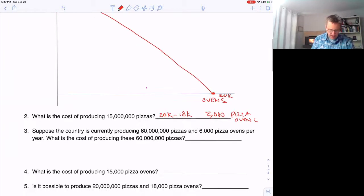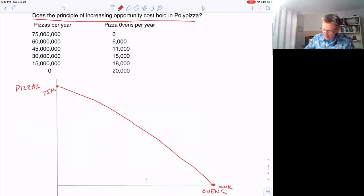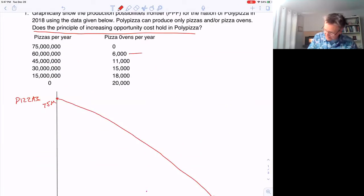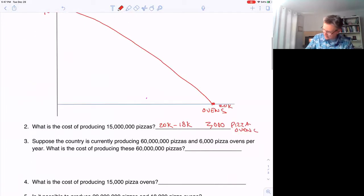And the next question, suppose we're currently producing 60 million pizzas and 6,000 pizza ovens. That means we're at this point right there. What's the cost of producing these 60 million pizzas? Well, it's going to be 20,000 minus 6,000, which is 14,000 pizza ovens.